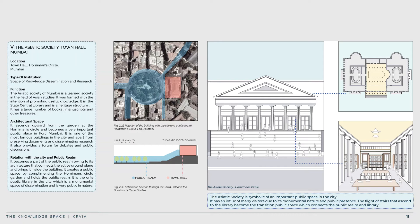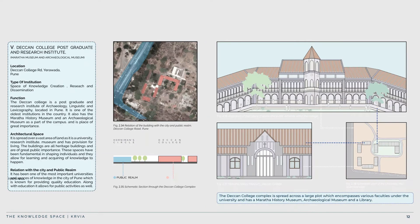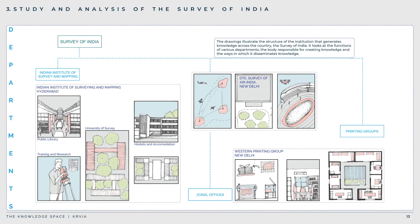The Asiatic Society, or Town Hall in Mumbai, is a learned society formed to promote useful knowledge. Its large repository of books and manuscripts is accessible, and it is a landmark in the city owing to its architecture that elevates the active ground plane into the building. The Deccan College in Pune is one of the oldest institutions, with a postgraduate college and two museums within the campus, providing a wholesome learning experience dedicated to dissemination and research with a large influx of students, researchers, and visitors.